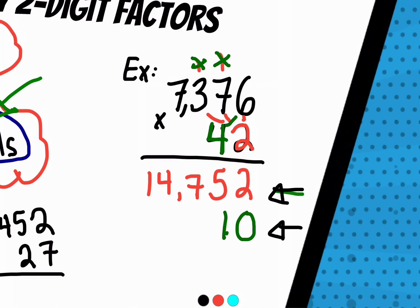Four times six is 24, carry the two. Four times seven is 28, 28 plus two is 30, carry the three.